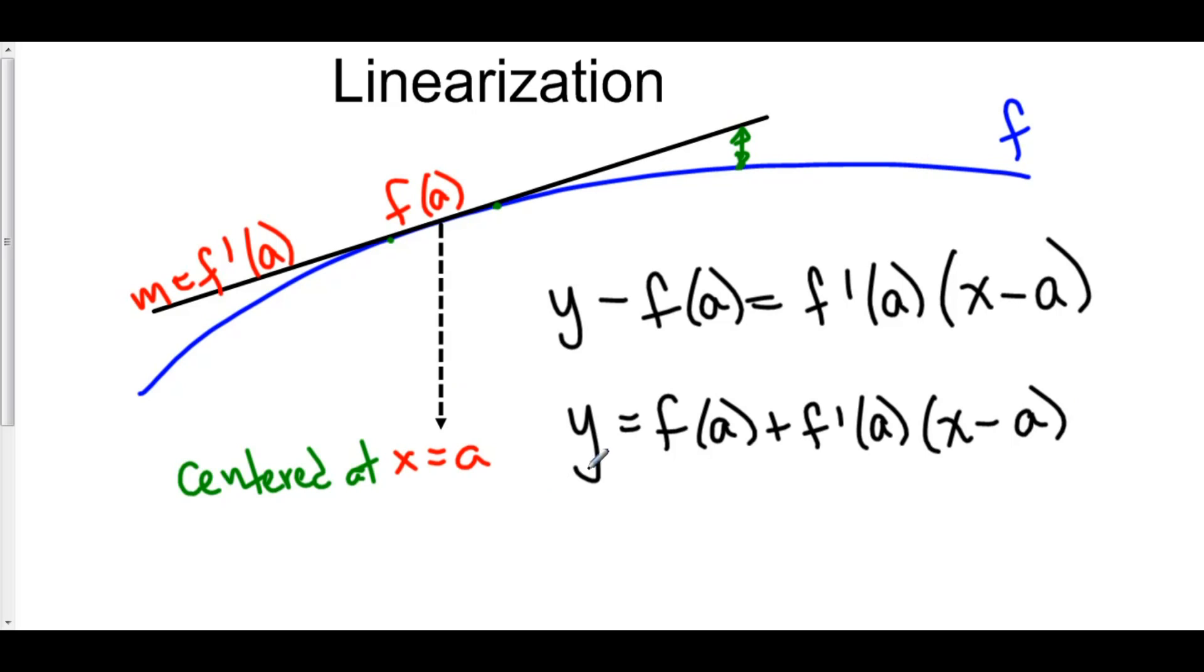This is the line in slope intercept form that is tangent to f at x equals a. This is also called the linear approximation for f, centered at x equals a.